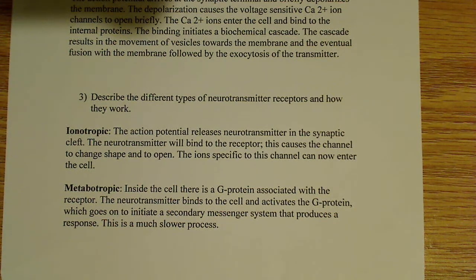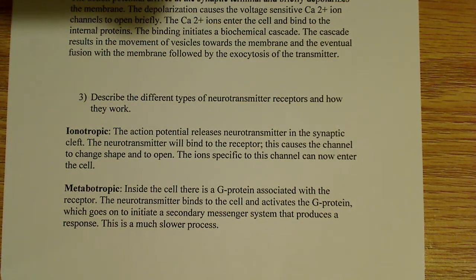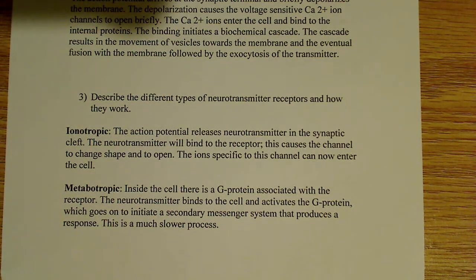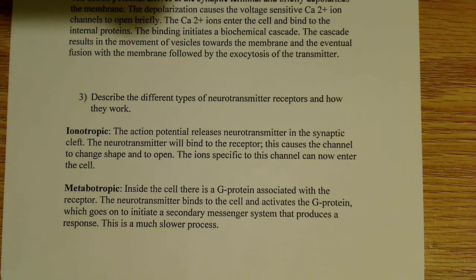Essentially, the neurotransmitter binds to the receptor, and paired with the receptor is a channel — some sort of protein channel. This channel allows ions to flow through it. What happens is we have a conformational change of the protein channel, and it allows it to open. Once it's open, any of the ions specific for that channel can now enter the cell. That's how these ionotropic receptors work.